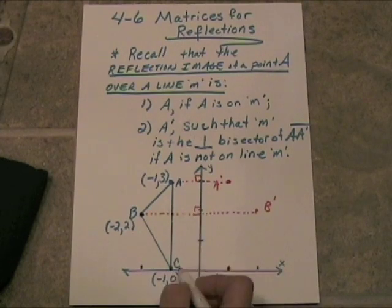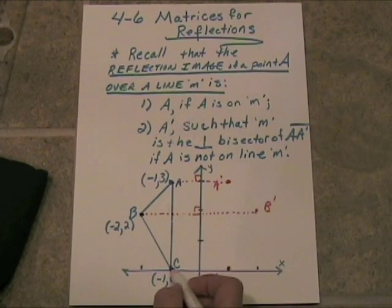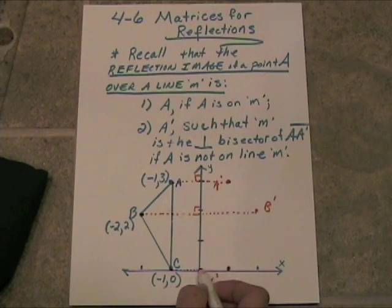Right angle formed right here. C will just, it's on the X axis right now, so it will just travel along the X axis the same amount, and we'll get C prime.